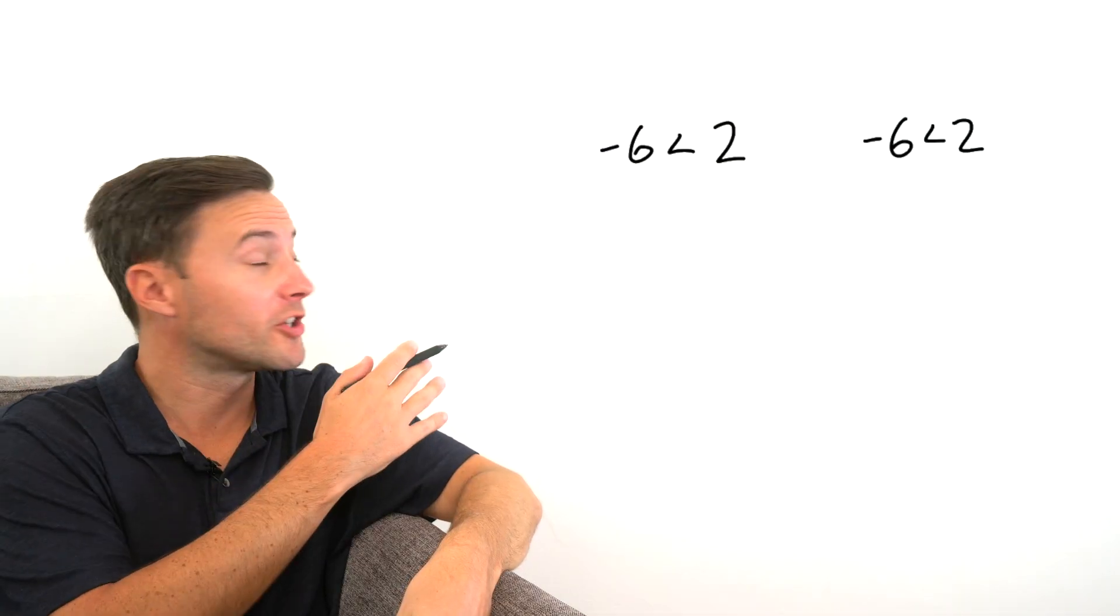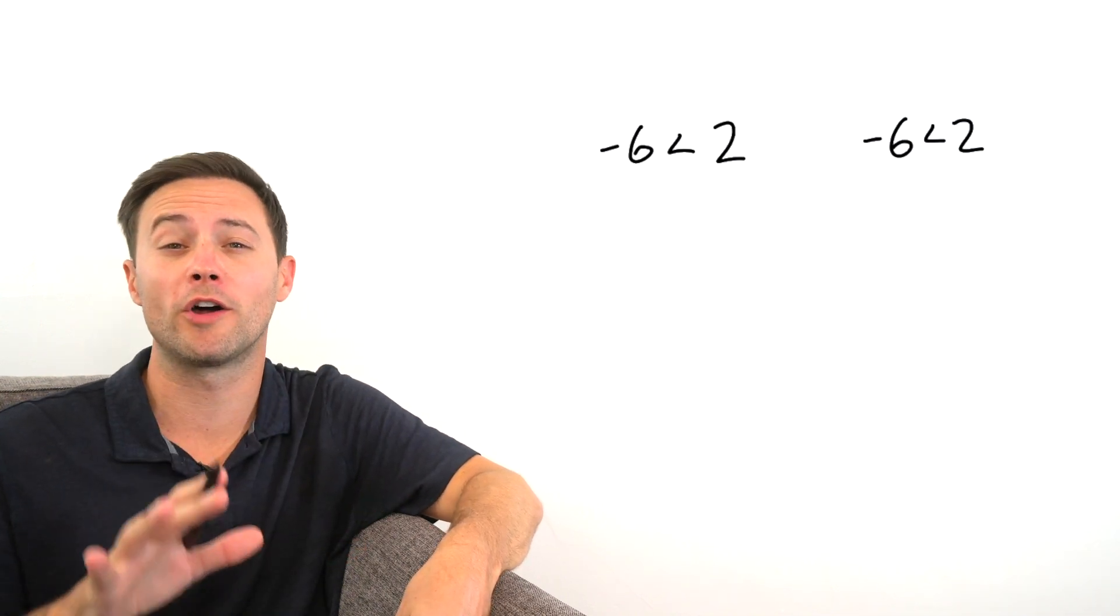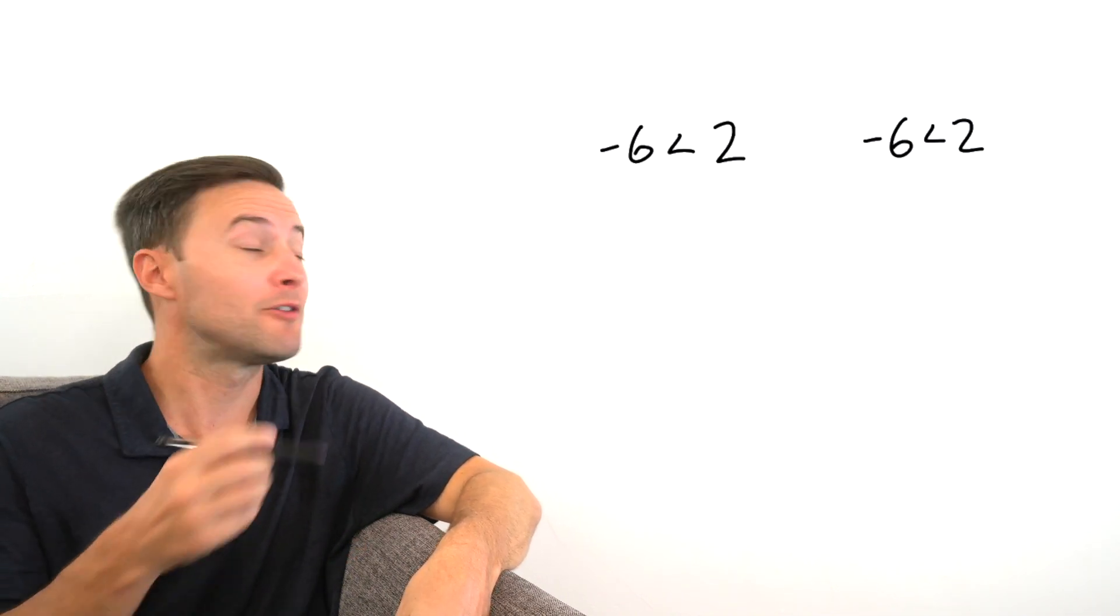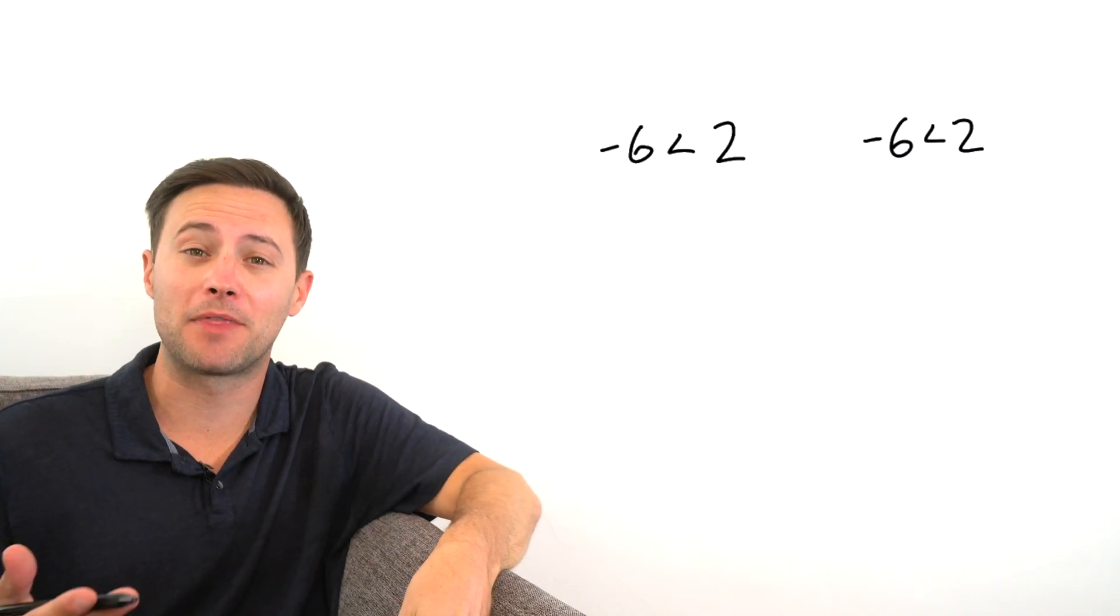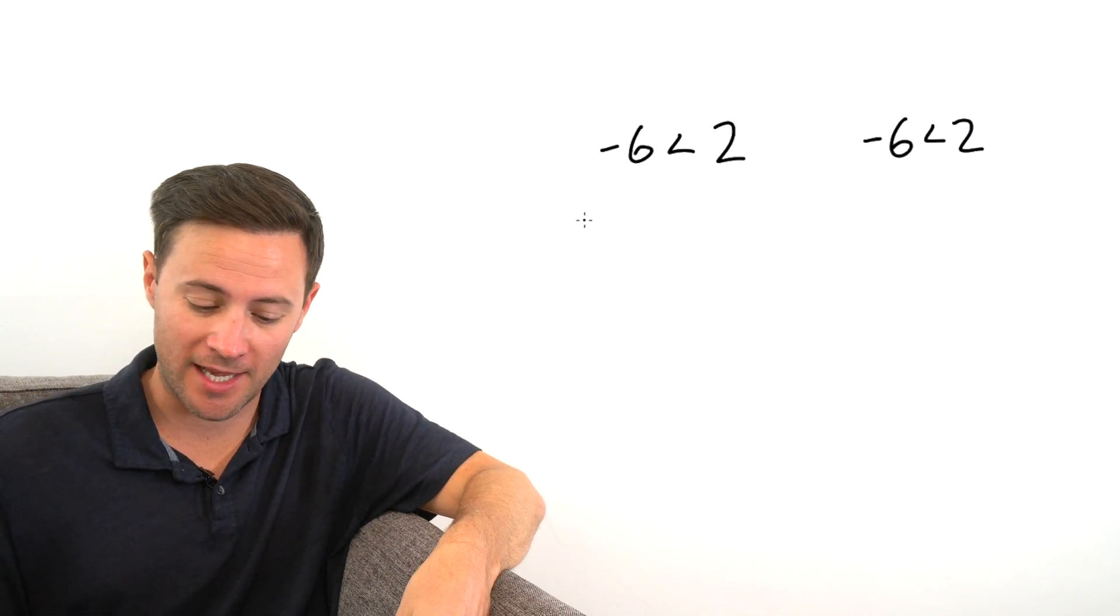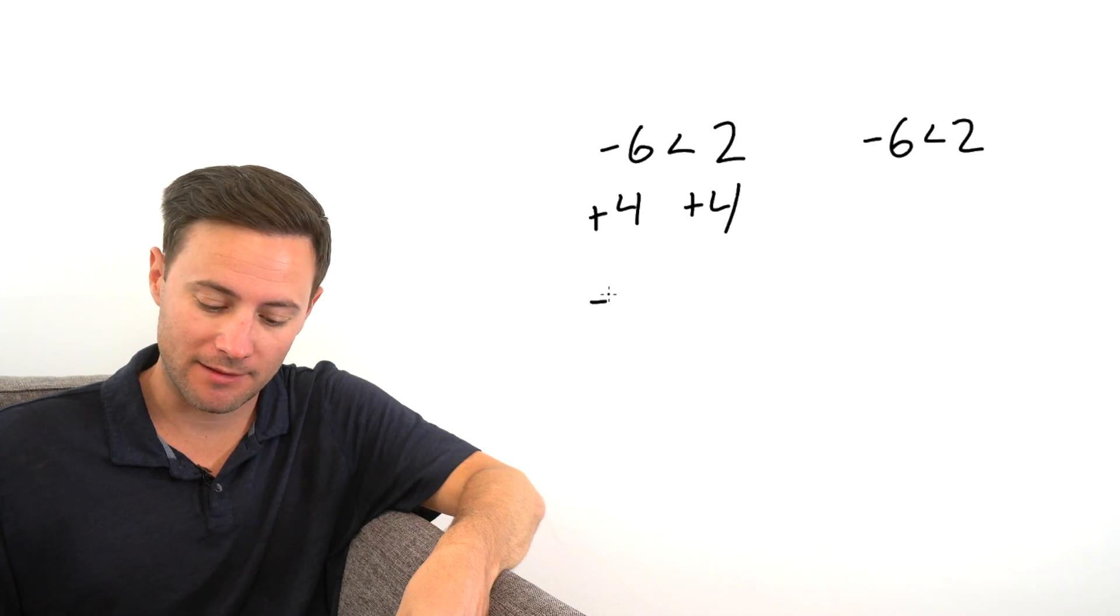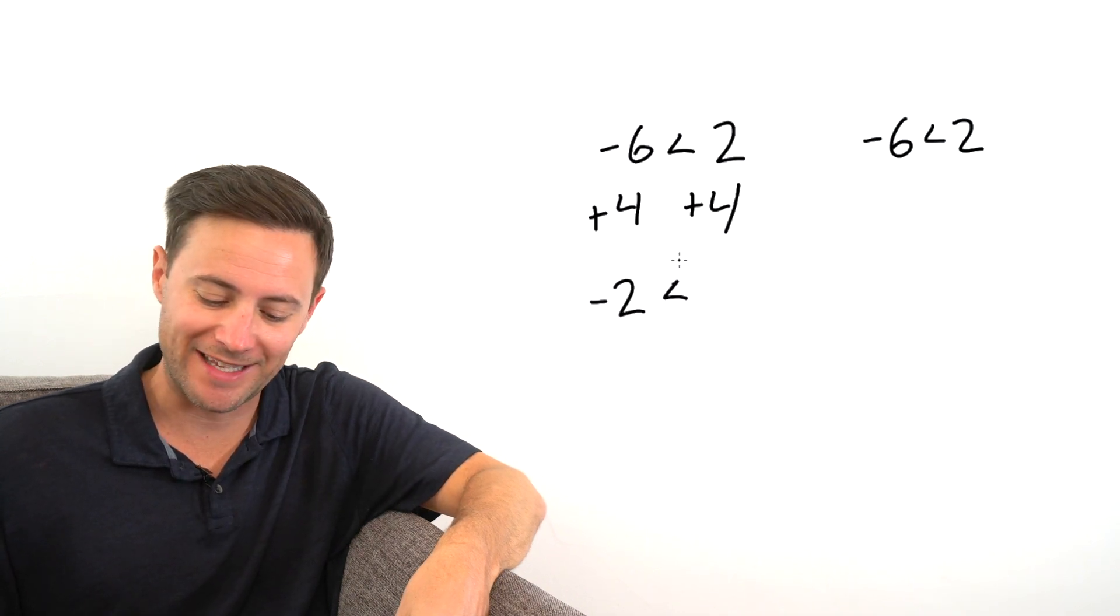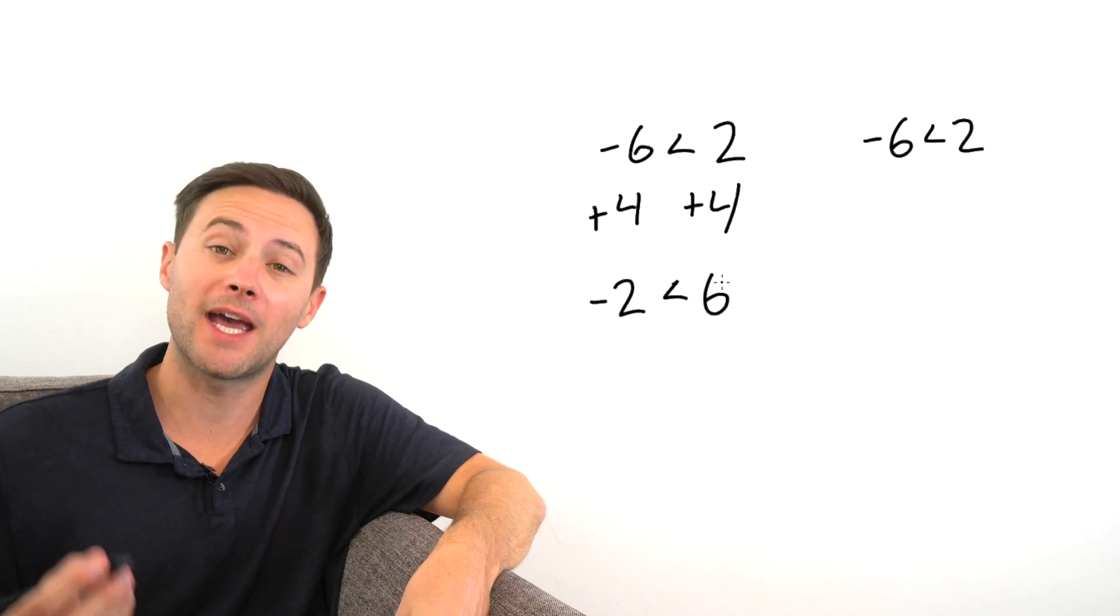You can always do a quick little check like this to make sure that what you're doing keeps the inequality true. So right now, negative six is less than two. If I add the same thing to both sides, we'll see if it stays true. Let's say we add four to both sides. Well, we would get negative two, and is that still less than six? Yes.